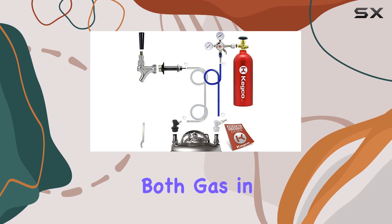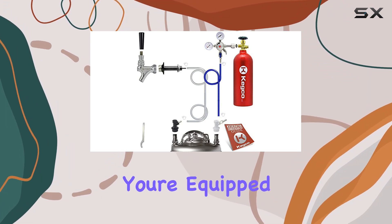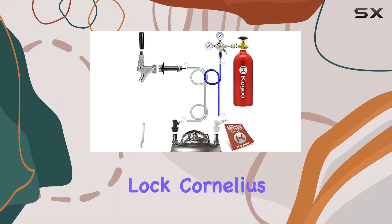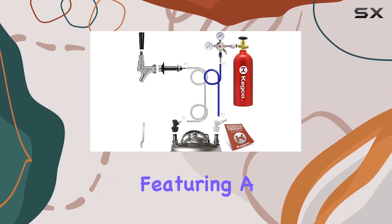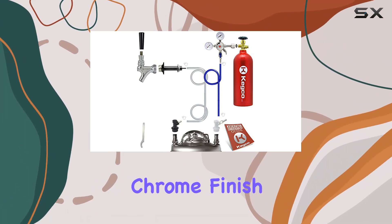Now onto the keg tap set. With both gas in and beer out couplers included, you're equipped to tap any ball lock Cornelius keg with ease. The faucet itself is top-notch, featuring a forged brass body and a sleek chrome finish that adds a touch of elegance to your setup.